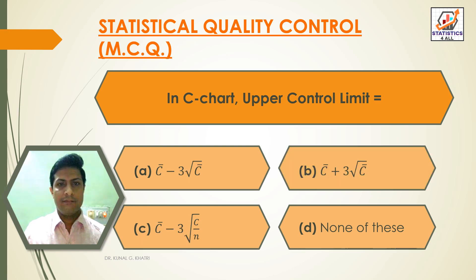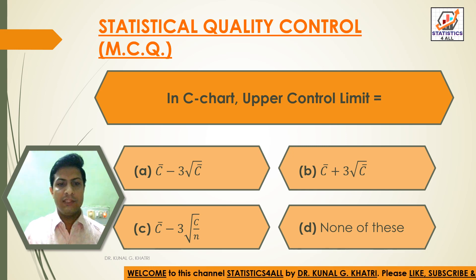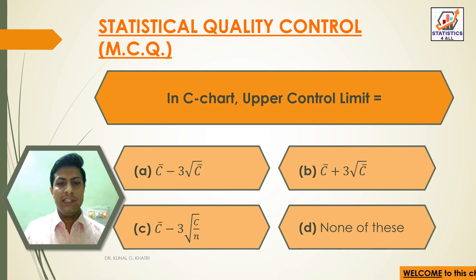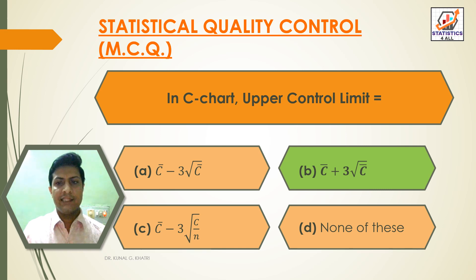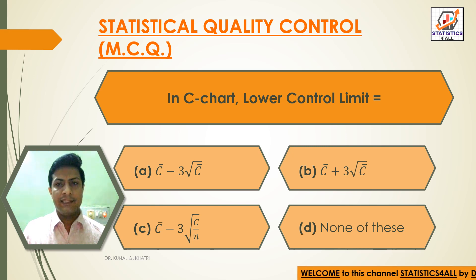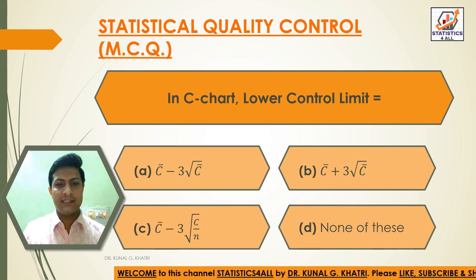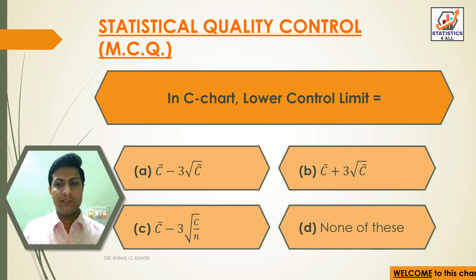Next question: in C chart, upper control limit is equal to? Option A: C bar minus 3 root C bar. Option B: C bar plus 3 root C bar. Option C: C bar minus 3 under root C divided by N. Option D: none of these. Answer: Option A — C bar minus 3 root C bar is the lower control limit in C chart.